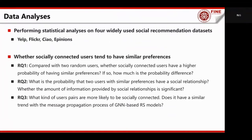We perform statistical analysis to verify whether socially connected users tend to have similar preferences on items. Specifically, we care about three research questions. One: compared with two random users, whether socially connected users have a higher probability of having similar preferences, and if so, how much is the probability difference? Two: what is the probability that two users with similar preferences have a social relationship, and whether the amount of information provided by social connections is beneficial? Three: what kind of user pairs are more likely to be socially connected, and does it have a similar trend with the message propagation style of GNN-based models?